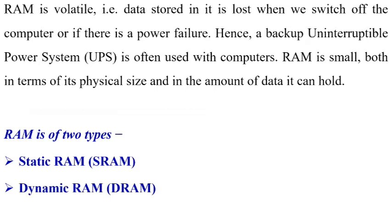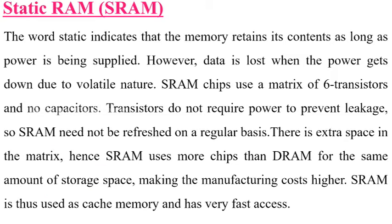RAM is divided into two types: Static RAM (SRAM) and Dynamic RAM (DRAM). For Static RAM, the word 'static' indicates that the memory retains its contents as long as power is being supplied. However, data is lost when the power goes down due to its volatile nature. SRAM chips use a matrix of six transistors and no capacitors. Transistors do not require power to prevent leakage, so SRAM does not need to be refreshed on a regular basis. Because SRAM uses more chips than DRAM for the same amount of storage, manufacturing cost is higher. SRAM is used as cache memory and has very fast access.